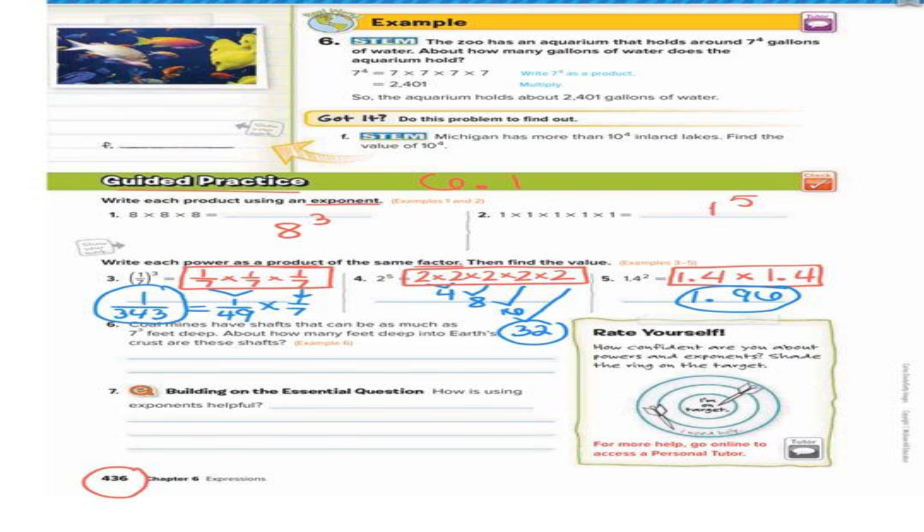Number 6. Coal mines have shafts that can be as 7 to the 3rd power feet deep. About how many feet deep into Earth's crust are these shafts? So they want us to solve 7 to the 3rd. So remember, 7 to the 3rd means 7 multiplied with itself 3 times.